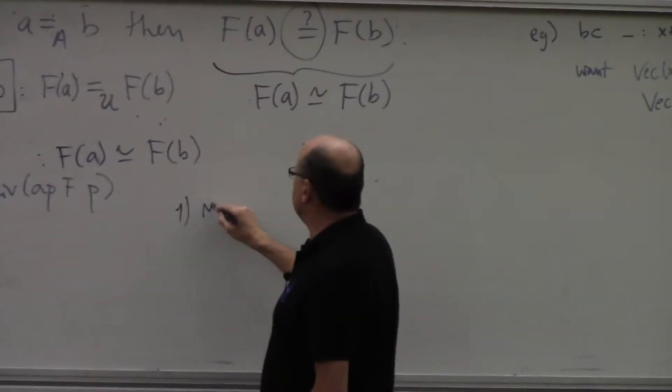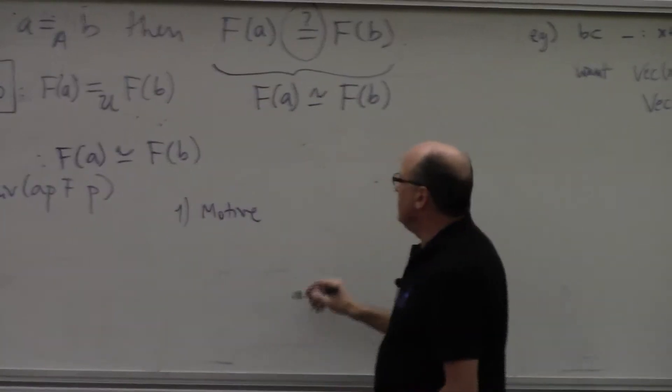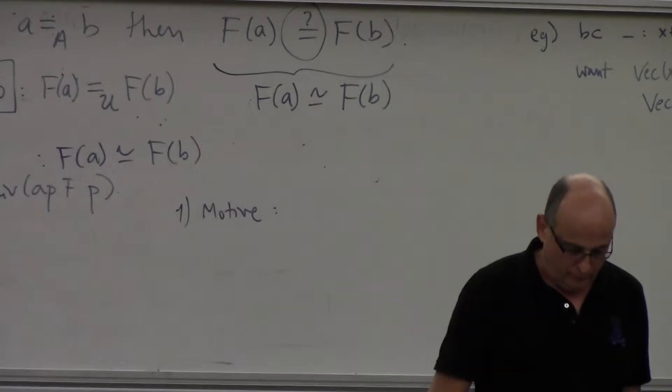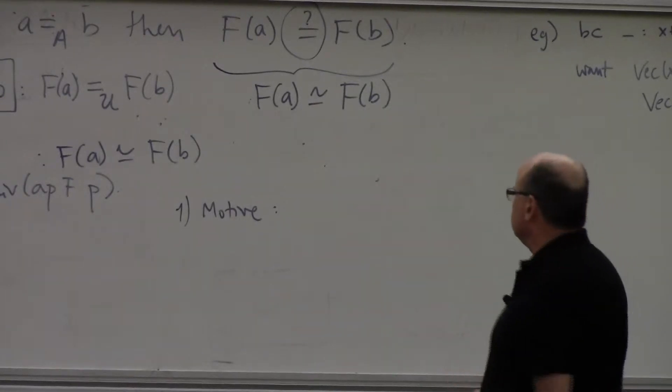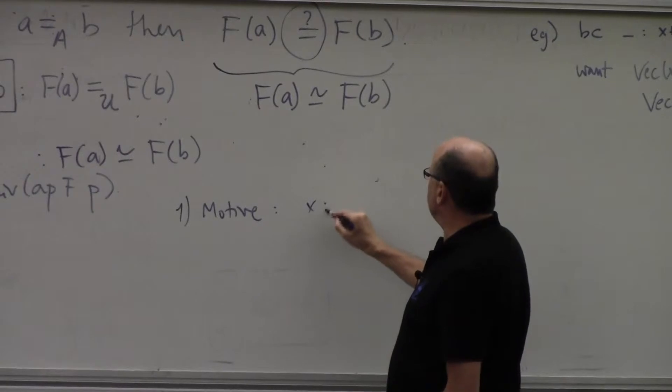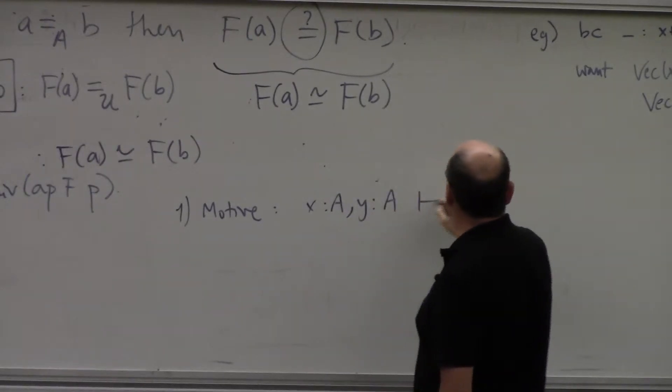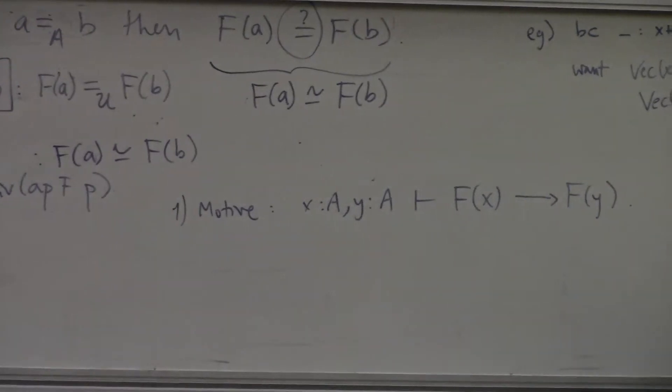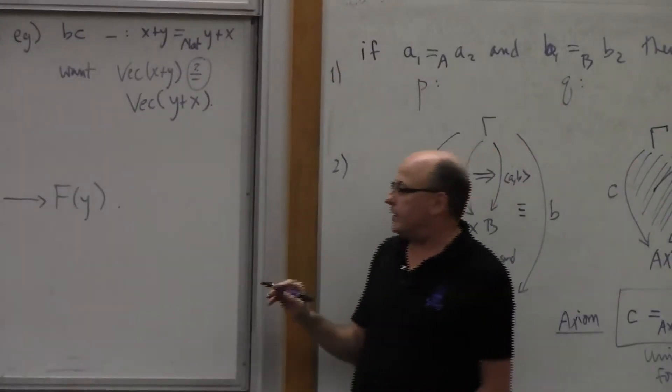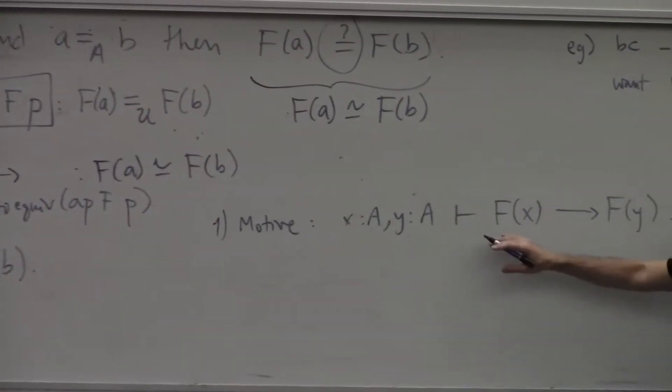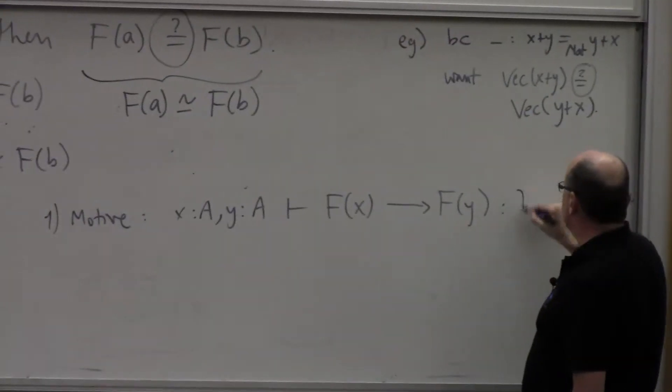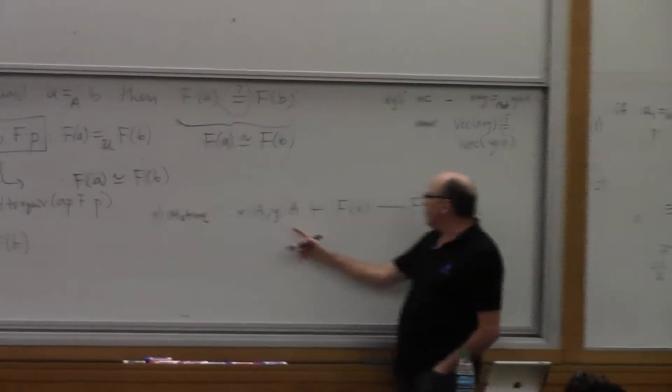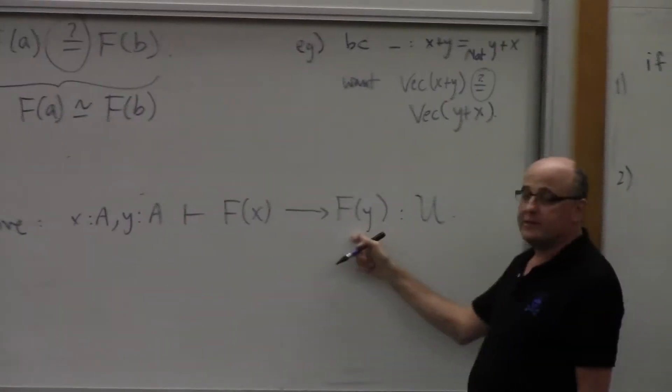So I'm going to claim that we can define that. So here is the motive. We're going to do this thing by path induction on p. What is the motive? Can someone tell me what the motive should be? I claim the motive should be given x in a and y in a, I want f of x arrow f of y. Yeah, somebody said that I heard. So the motive is going to be that this is in u.